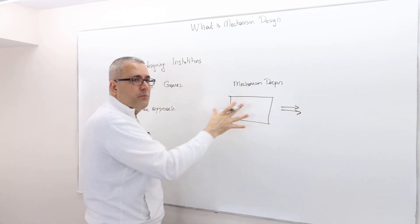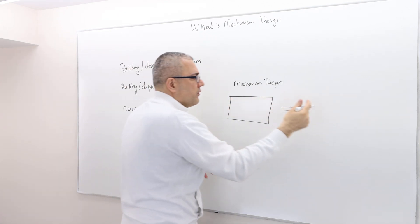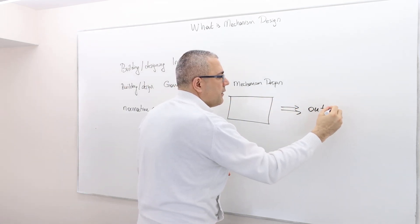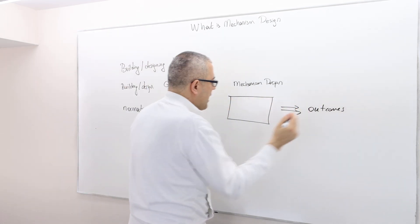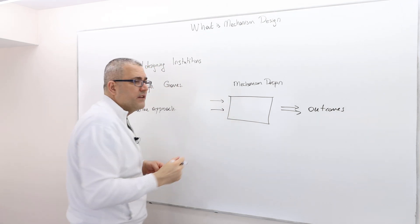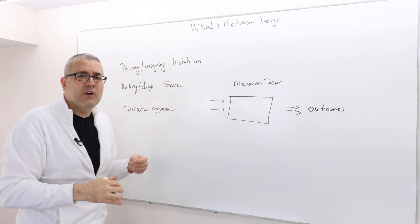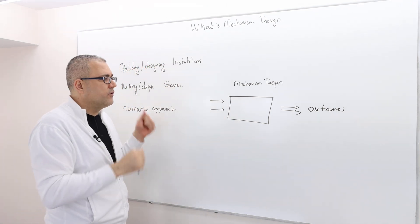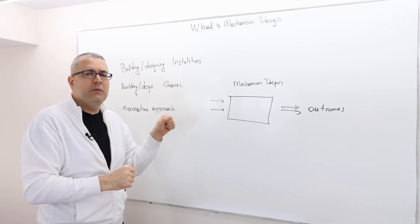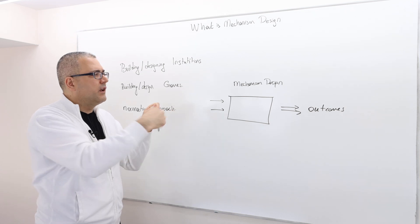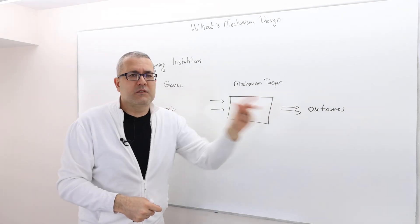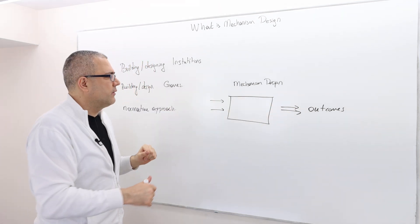Obviously, this play is going to lead to some outcomes. And obviously, we need some inputs — we have to feed this machinery with inputs. The players play the game, and then it spills out some outcomes.